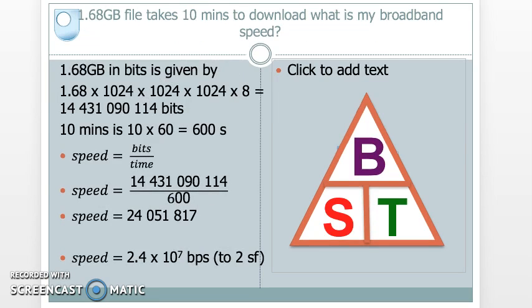So finally, let's have a look at an application. A 1.68 gigabyte file takes 10 minutes to download. What's my broadband speed? 1.68 gigabytes. We need to convert it into bits. And this is given by, remember, we've seen this formula several times now. It's giga, so it's going to be 1024 × 1024 × 1024. That gives me giga. Multiply it by 1.68, but I mustn't forget to multiply it by 8 to turn it into bits.